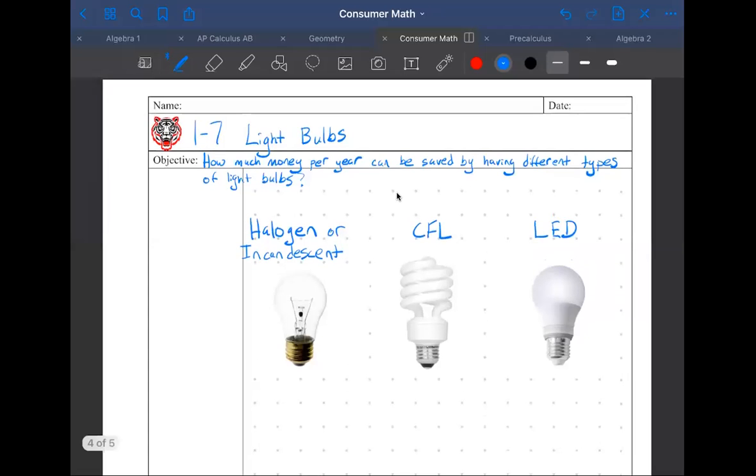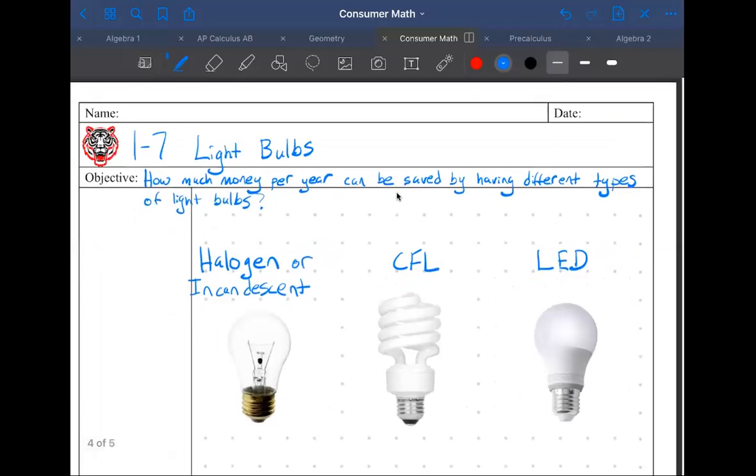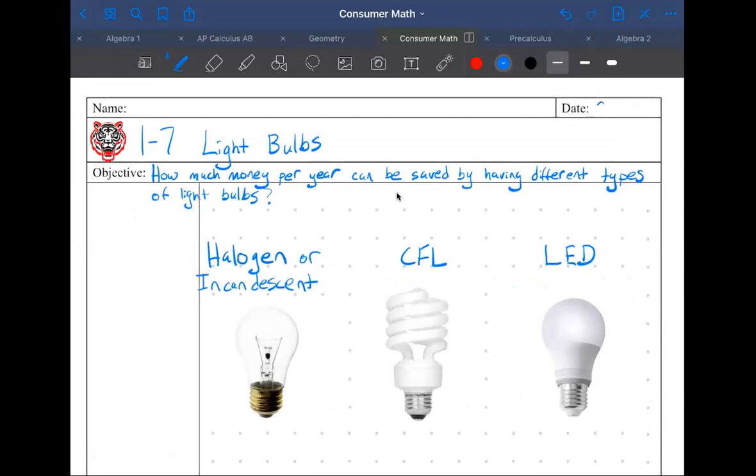All right, we're in consumer math lesson 1-7. Today's date is Tuesday, September 8th, 2020. Today is all about saving money with light bulbs. The main amount of money that you can save from light bulbs isn't by turning them off, although you can. You'll only save probably maybe ten dollars a year. The main difference is choosing your type of light bulb between halogen, CFL, LED, stuff like that.